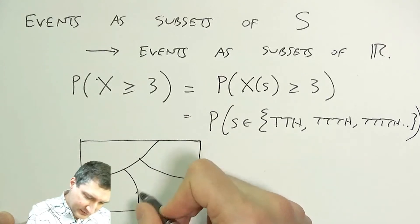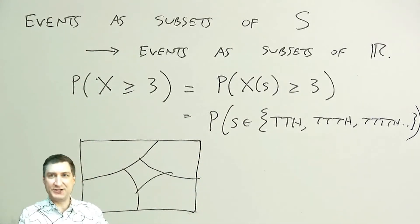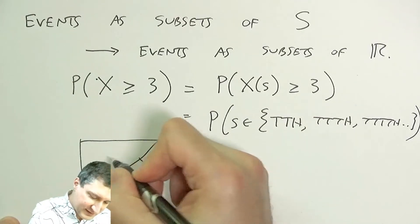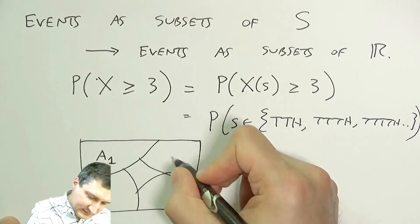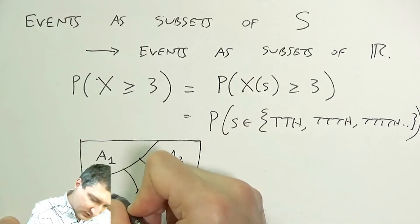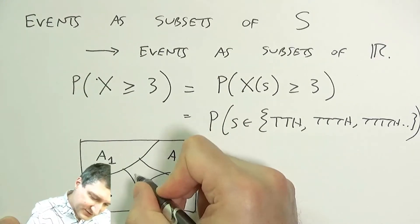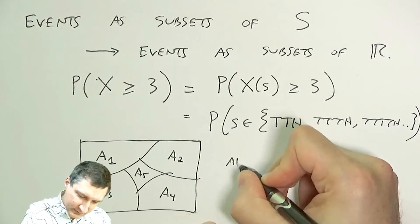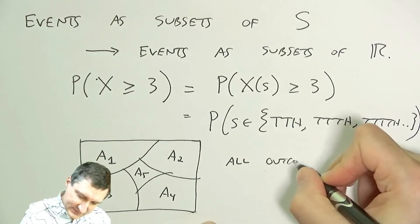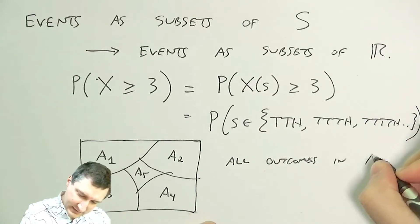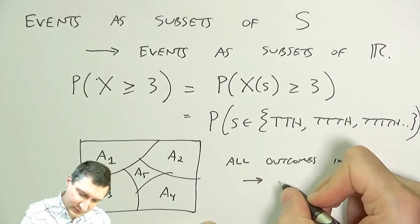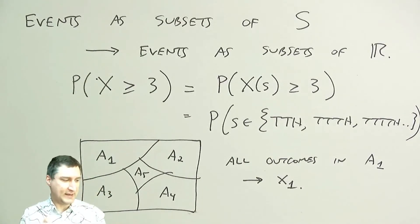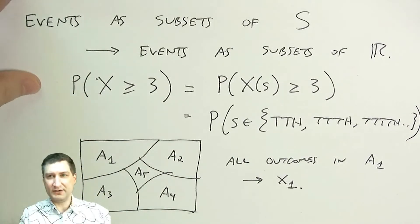Right, so if I had events out here in S that partitioned the events, this is like saying these are all of the outcomes in the original experiment that map to the value 1. So all outcomes in A1 map to the number X1.